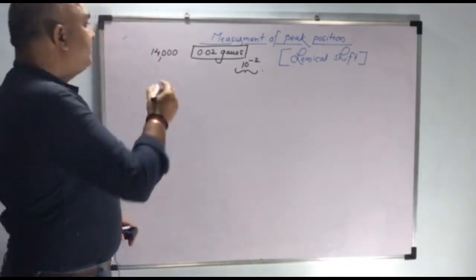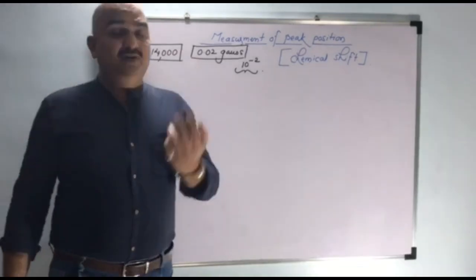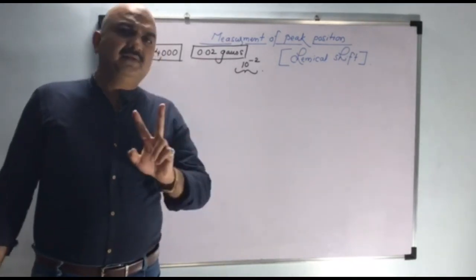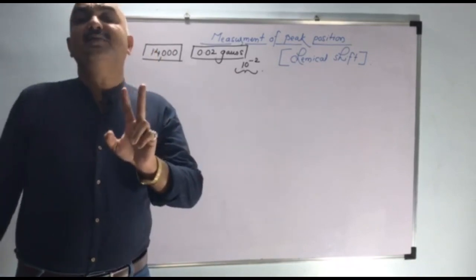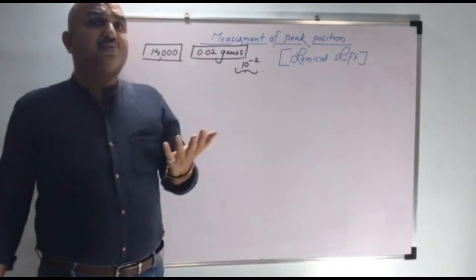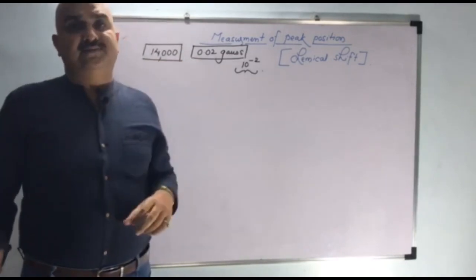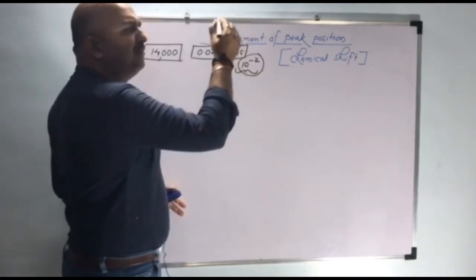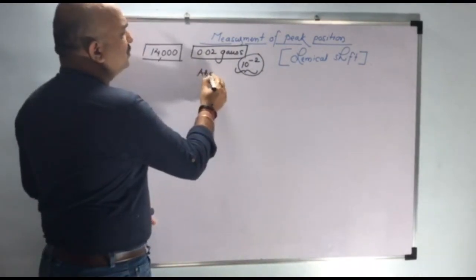Our instrument is producing a magnetic field of around 14,000 Gauss. Please see the difference. H1 NMR spectroscopy gives different signals, but sometimes the difference in magnetic field between two peaks is only 0.02 Gauss while our instrument produces 14,000 Gauss. So it is very difficult to measure this factor of magnetic field and very difficult to measure the absolute peak position.